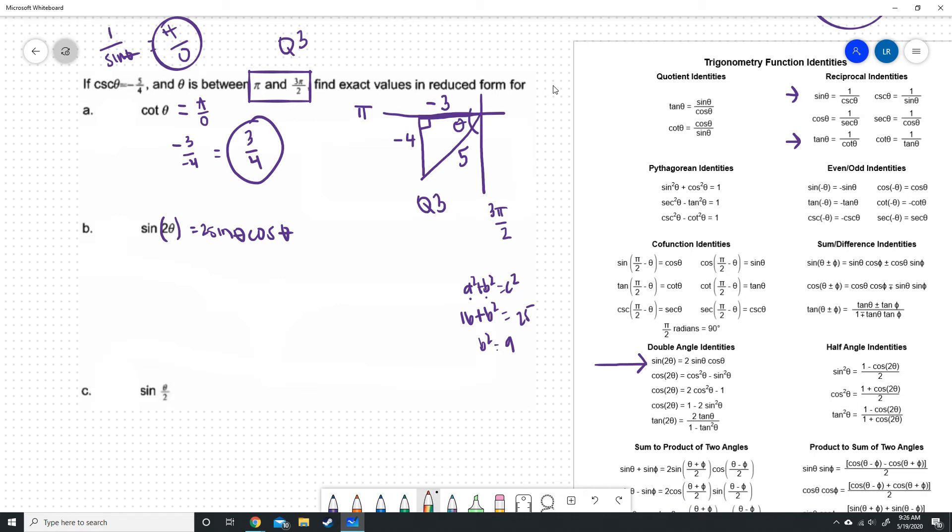So I need to know what is sine of theta, and what is cosine of theta. Luckily, we have this super cool triangle right here that tells us all of this information. So I'm going to keep the 2 there. Sine of theta is opposite over hypotenuse, so it's negative 4 over 5. I'm going to replace the sine of theta with negative 4 over 5. Cosine is adjacent over hypotenuse, and so negative 3 over 5.